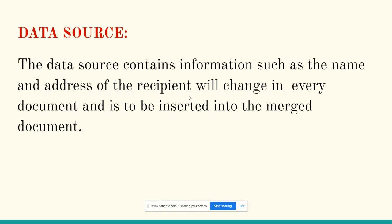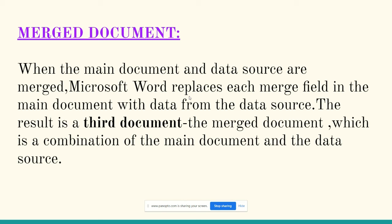If you are giving names and addresses into the main document, the data source collects all the information. If you make a change in the main document, it automatically changes in the data source. The third component is the merged document. When the main document and data source are merged or combined, the result is called a merged document. In Microsoft Word, it replaces each merge field in the main document with data from the data source, resulting in a third document which is a combination of the main document and the data source.